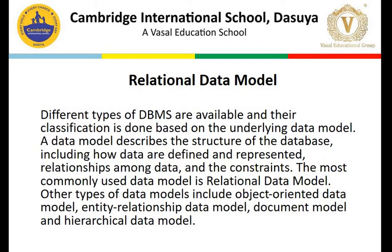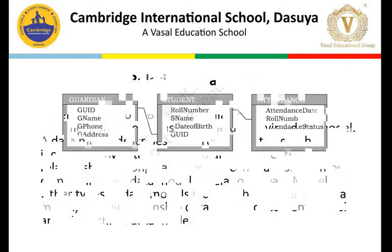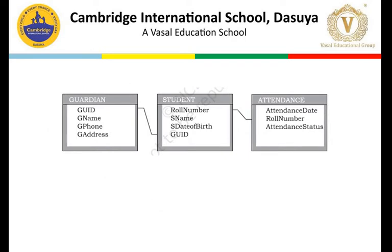We discussed the relational model because we are here to discuss RDBMS. The key constituents of a relational model were shown using three related tables. The guardian table contains guardian ID, name, phone number, and address. The student table contains student roll number, name, date of birth, and guardian information. We can also fetch information from all three combined tables - for example, finding which guardian's child is studying in a class with a certain attendance. For this, we need to join all three tables, which is the basis of a relational model.